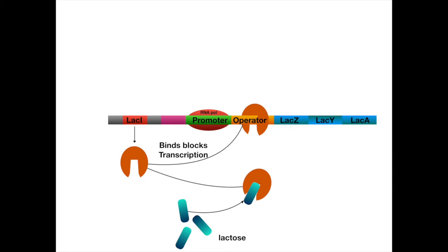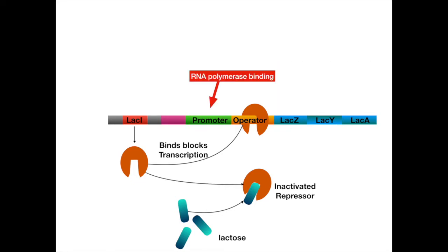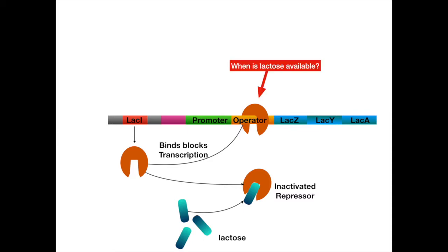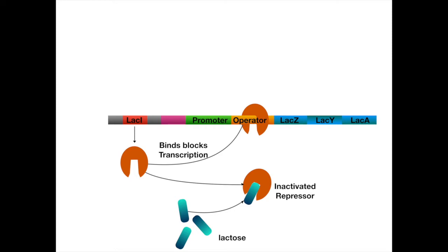Now the operon has genes to metabolize lactose, a promoter for RNA polymerase binding, and a way to sense if lactose is present. But how does it choose glucose over lactose if both are present at equal concentrations? Let's first think about what signals the cell that there is a low concentration of glucose. An enzyme called adenylate cyclase converts ATP to cyclic AMP when glucose concentrations are low.